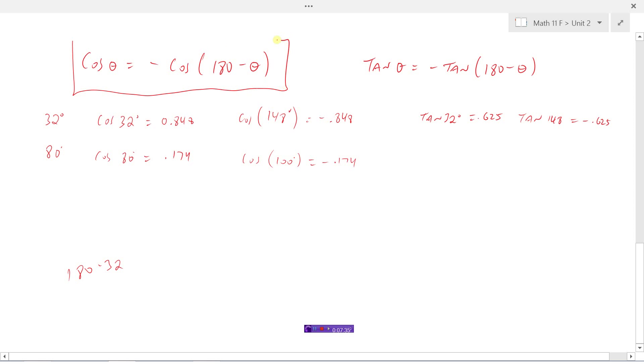So these are two other identities that we have for the obtuse angle. Cosine of any angle is the same thing as cosine of 180 minus that angle, but it'll come out with a negative ratio instead. Same for tangent. Those are some need-to-know identities for the obtuse angles.